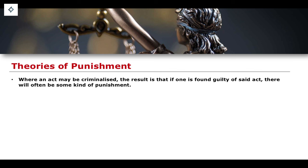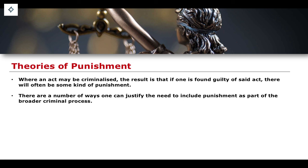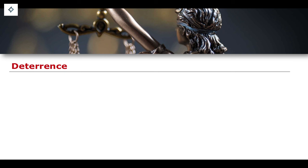Where an act may be criminalized, the result is that if one is found guilty of said act, there will be some kind of punishment. We can justify punishment on a number of different bases, and we need to justify the need to include punishment as part of the broader criminal process. We're going to look at four of the common justifications for having punishment as part of the criminal process. The first of which is this idea of deterrence.